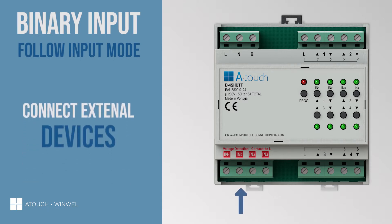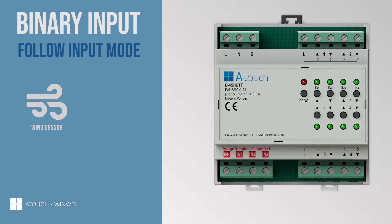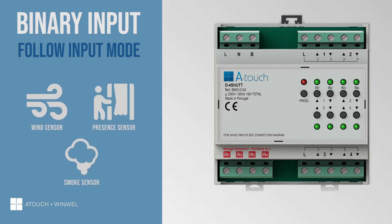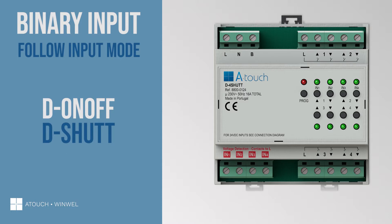Binary inputs connect external devices to the system and are used to indicate pressure buttons and different kinds of sensors. We can find binary inputs on the D on/off and D shutters modules, as well as on touch panel keys. We can set the command type on binary inputs.